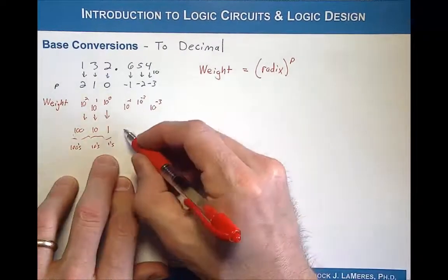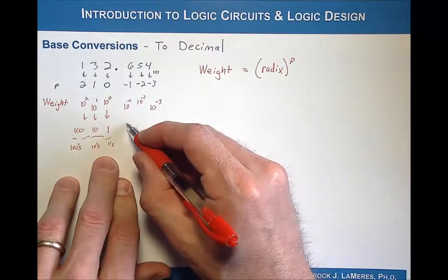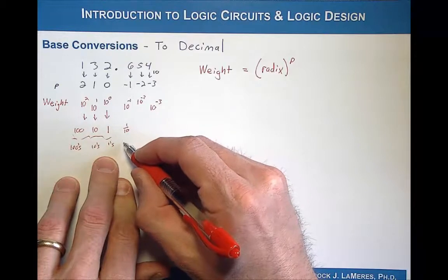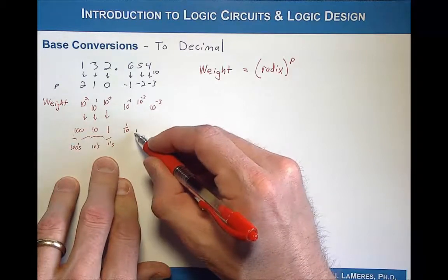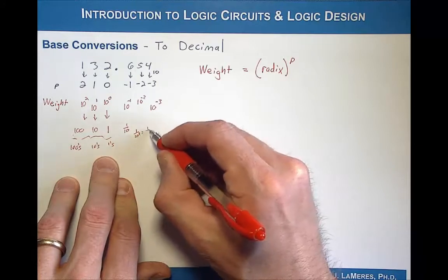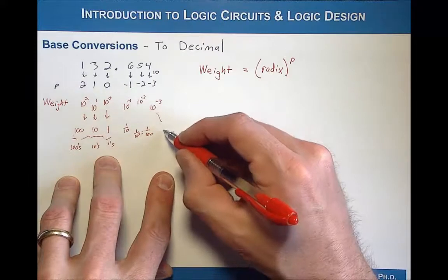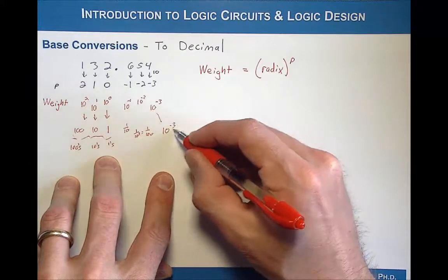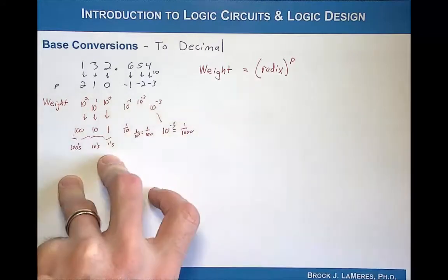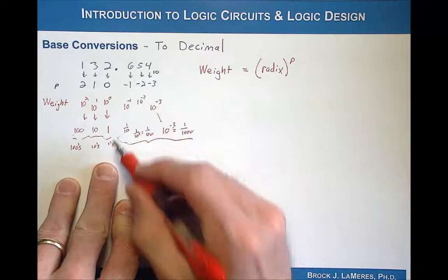Similarly, we can evaluate 10 to the negative 1, which is simply 1 over 10, and that's where the term the tenths position comes from. Then we have 1 over 10 squared, which is equal to 1 over 100, so that's the hundredths position. And finally we have 10 to the negative 3, which is equal to 1 over 1,000, which is the thousandths position. So these are the respective weights of each of these positions.